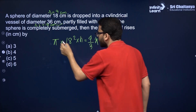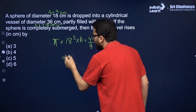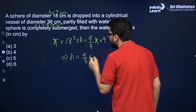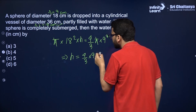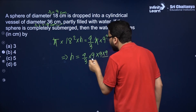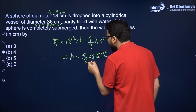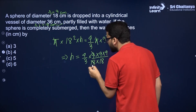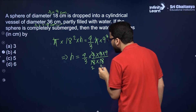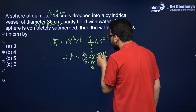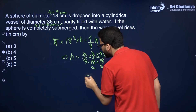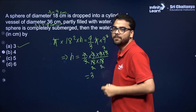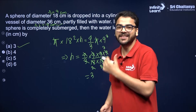You can cancel out π. The value of rise in water is 4/3 × 9 × 9 × 9 divided by 18². Never multiply first — simplify step by step. So: 9 twos are 18, 9 twos are 18, 2 twos are 4, 3 threes are 9 — everything cancels out easily. So the answer is 3 cm. I hope the question is clear to you. Let's take the next question.